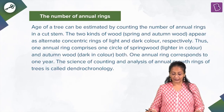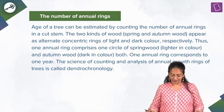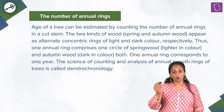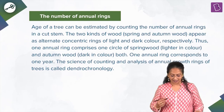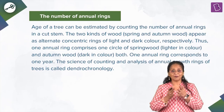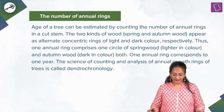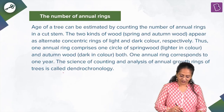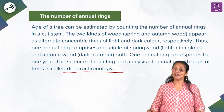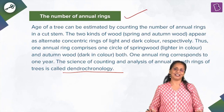The age of a tree can be estimated by counting the number of annual rings in a cut stem. The two kinds of wood — spring wood and autumn wood — appear as alternate concentric rings of light and dark color respectively. One annual ring comprises one circle of spring wood, which is lighter in color, and autumn wood, which is darker in color. One annual ring corresponds to one year. The science of counting and analyzing annual growth rings is called dendrochronology.